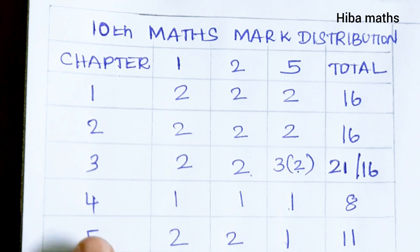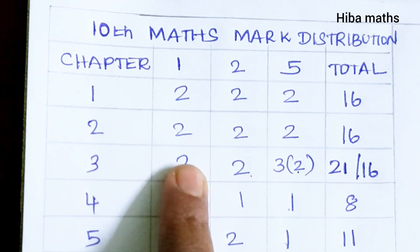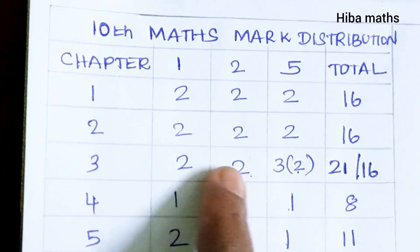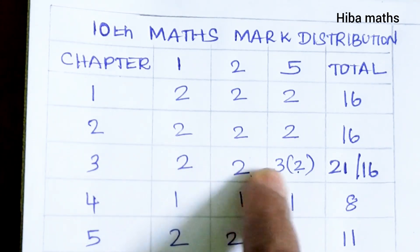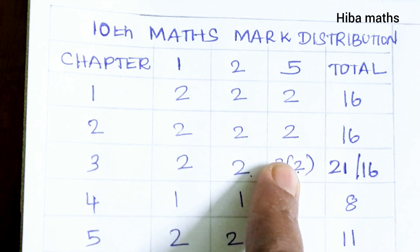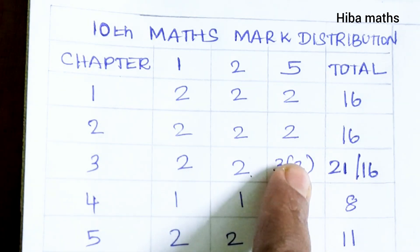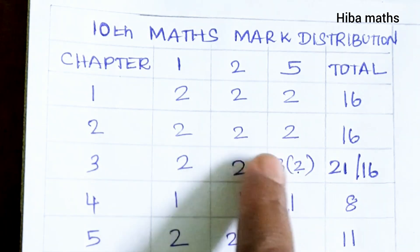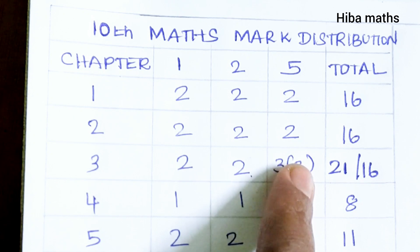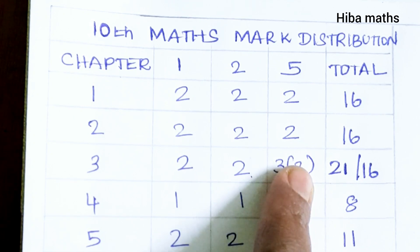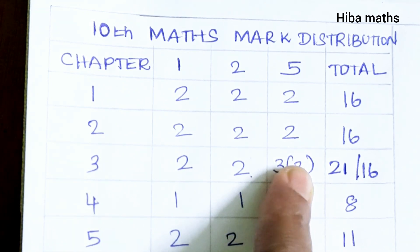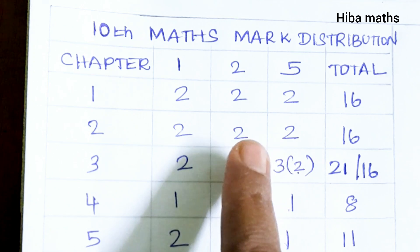The second lesson has 1 one-mark, 1 two-mark, and 1 five-mark. The second lesson covers AP sums. APGP sums are 5-mark questions — that is the last sum. The sum of special series is also a 5-mark question.